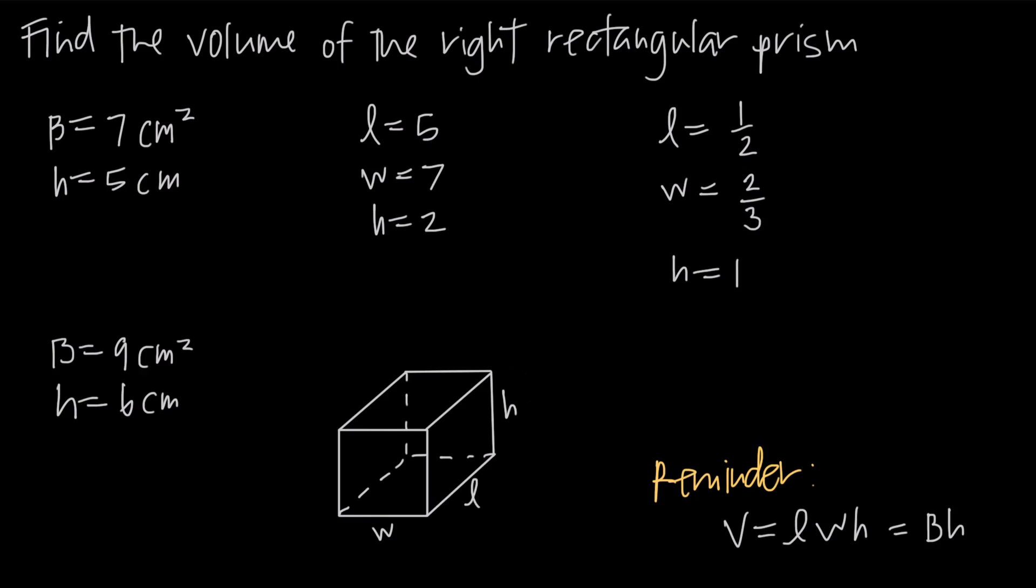So these are really simple examples here. If I want to look at the first example, I've been told the area of the base is 7 square centimeters, and that the height is 5 centimeters. So I know the area of the bottom, I know the height is 5. My volume formula tells me that I just multiply the base, the area of the base, times the height. So I'm going to say volume is equal to 7 times 5, or 35 centimeters cubed or cubic centimeters.